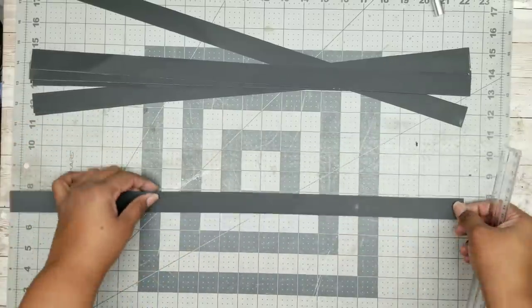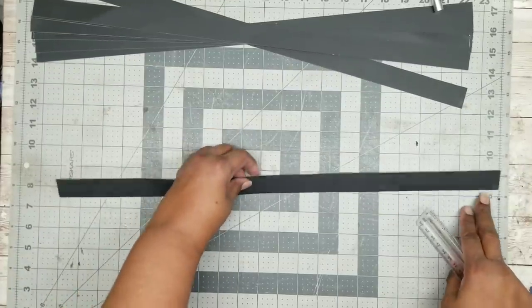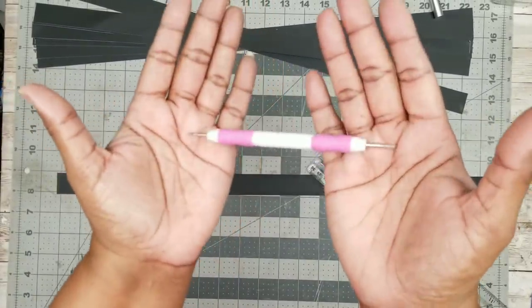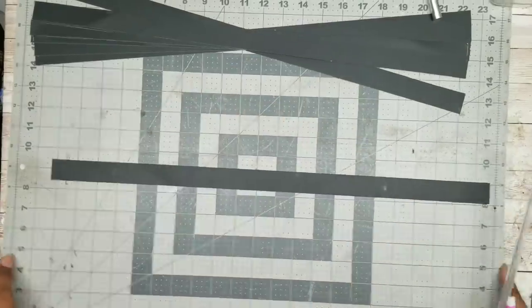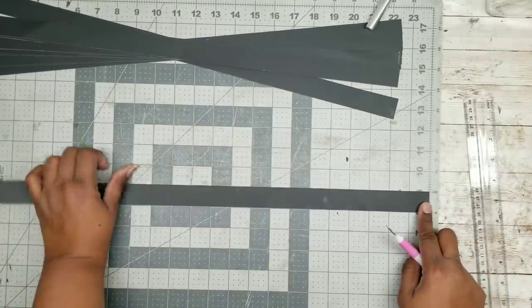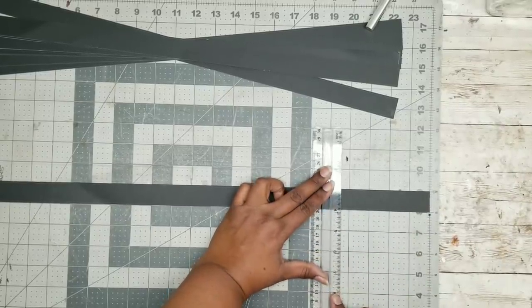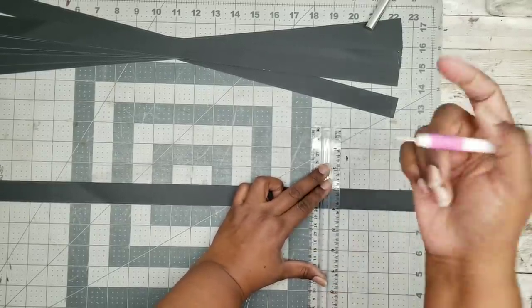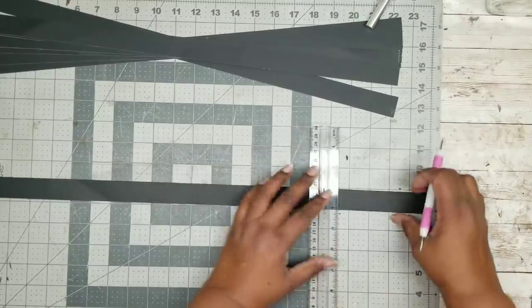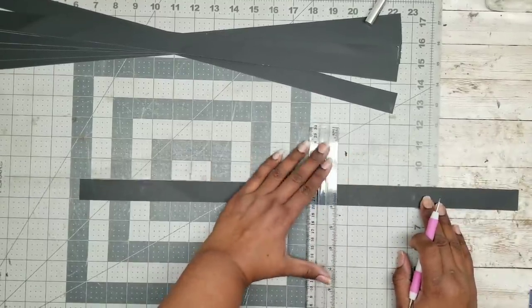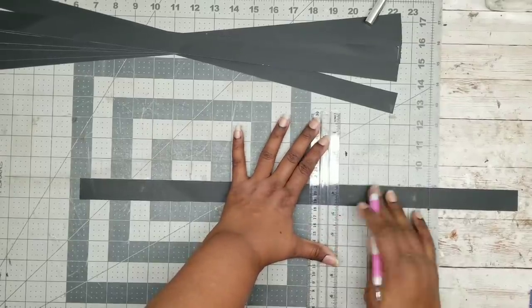Now what we're going to do with each one of our strips is we are going to mark them at four and a half inches with an embossing tool. What this does is create a fold line so everything is nice and even. I'm going to go to the four and a half inch line and make an embossing line at four and a half inches until you have four four and a half inch sections on that strip.